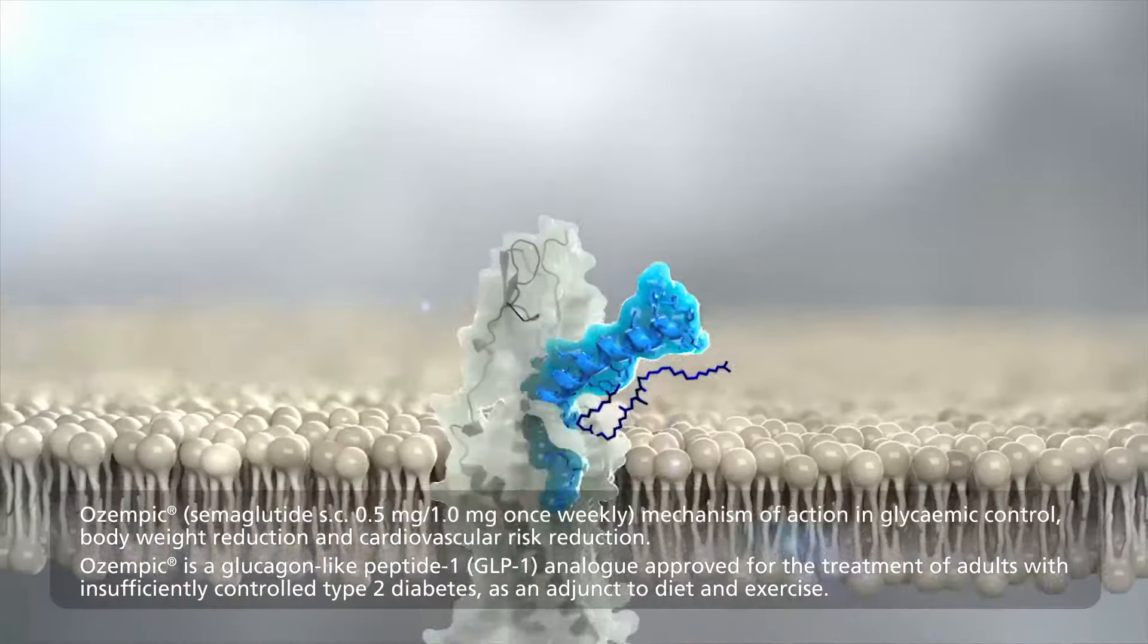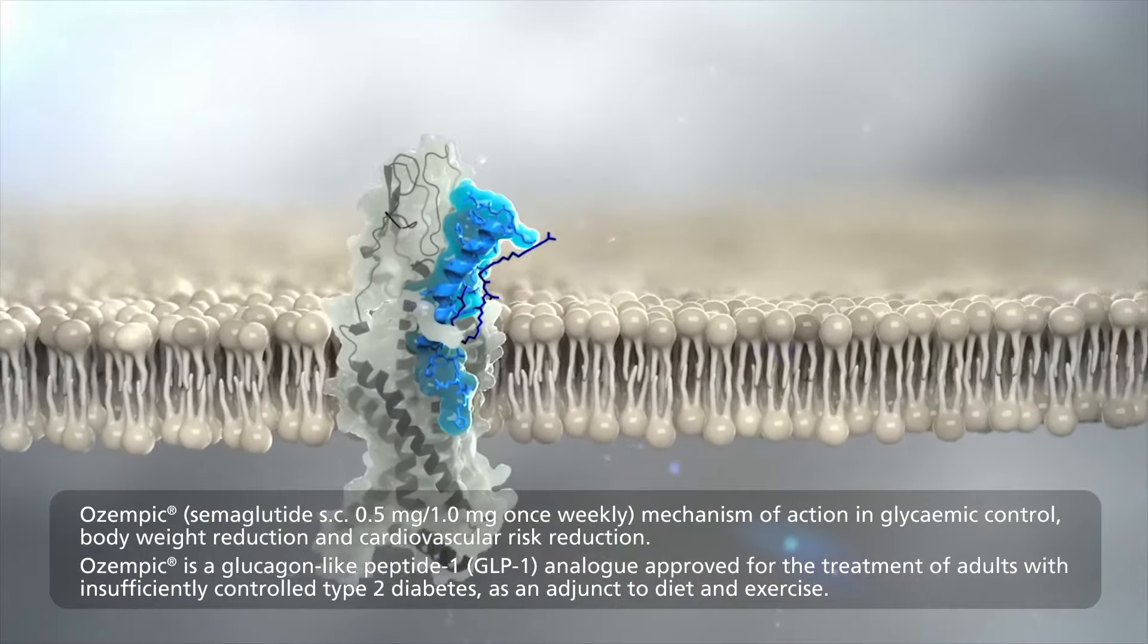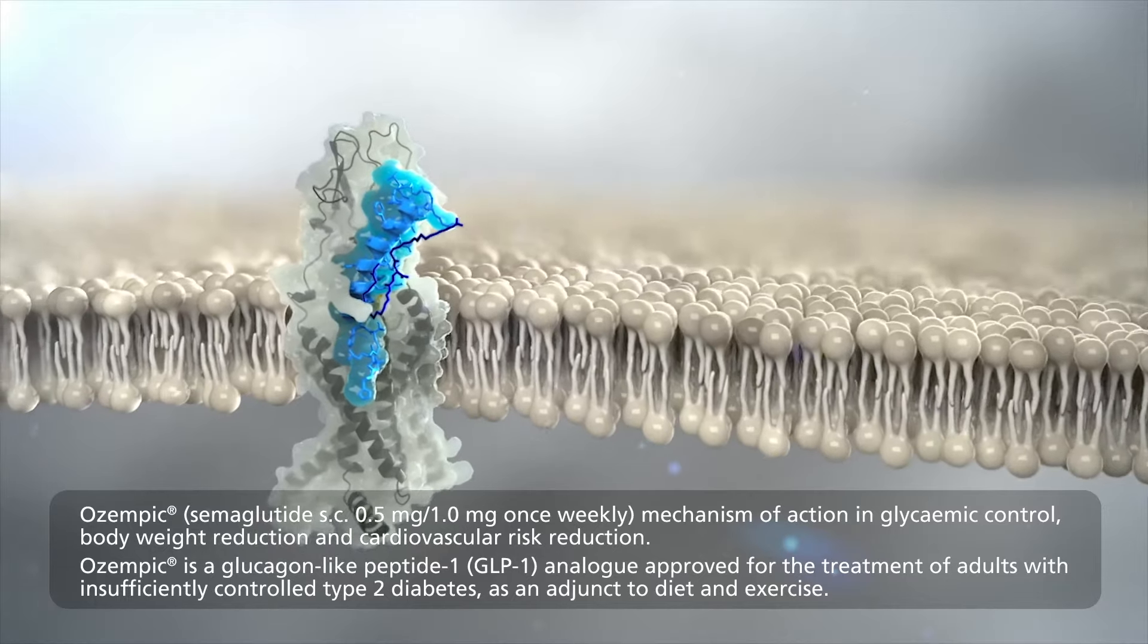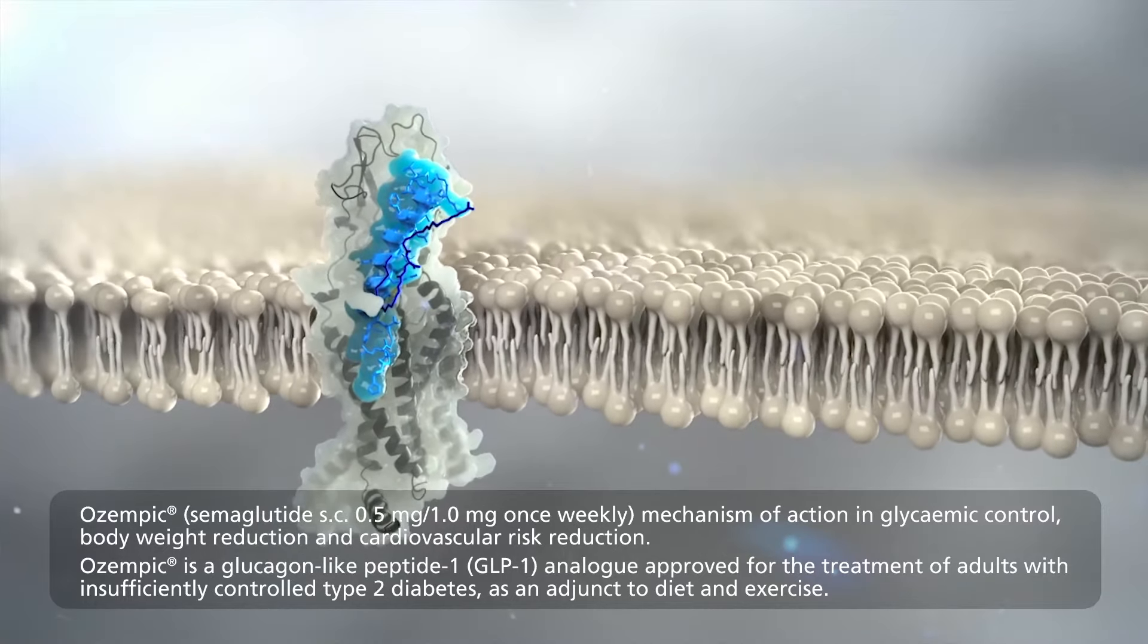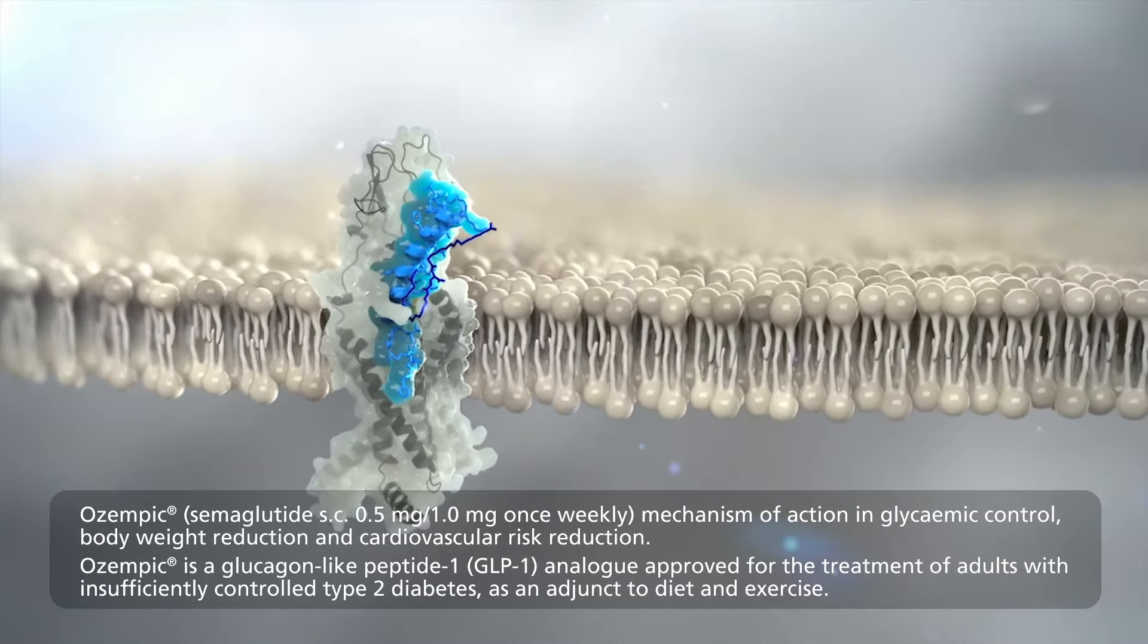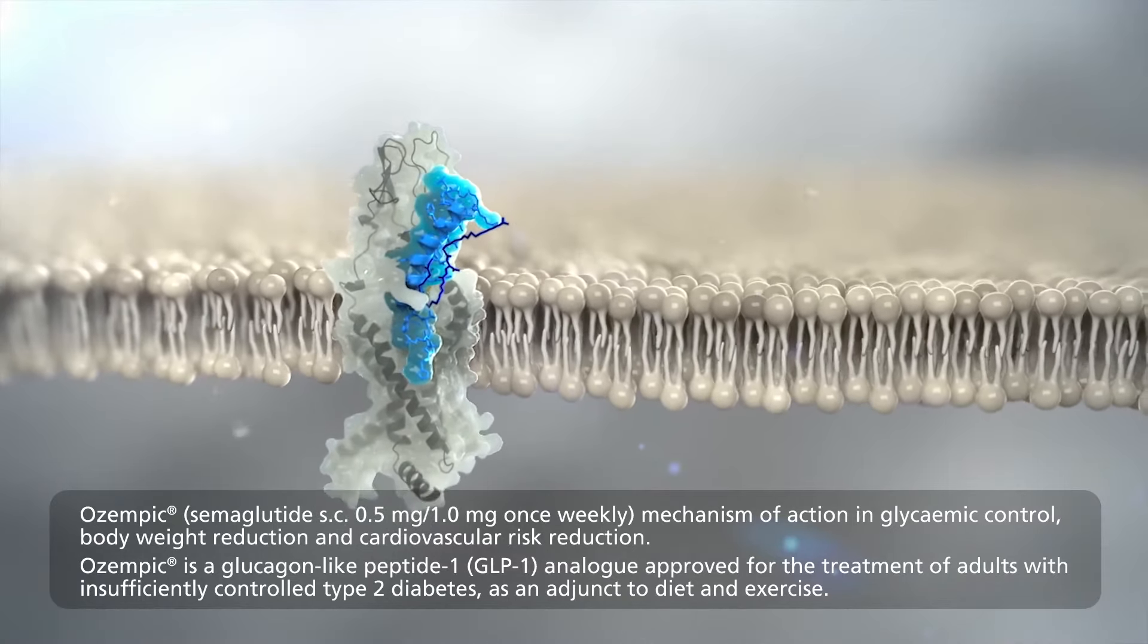Ozempic is an optimized glucagon-like peptide 1 or GLP-1 analog approved for the treatment of adults with type 2 diabetes. GLP-1 is a physiological hormone that has multiple actions in glucose and appetite regulation and in the cardiovascular system.